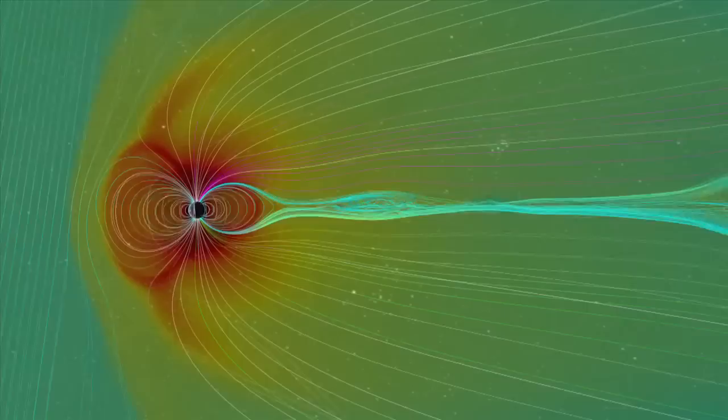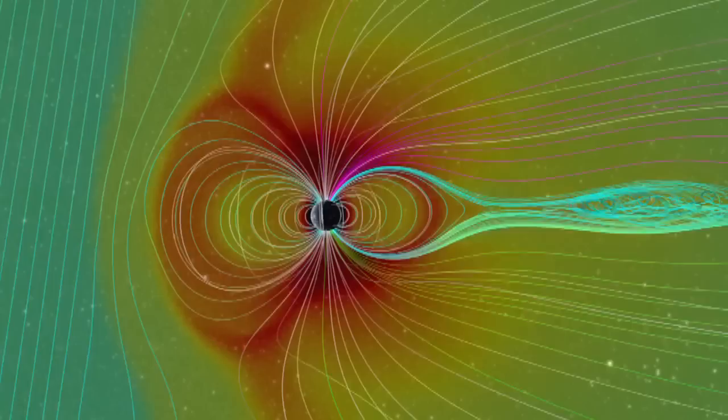With the aid of similar computer models as before, we can explore some of these possibilities. Here, a much stronger CME compresses the magnetic field between the Sun and Earth and generates more density in the bow shock,